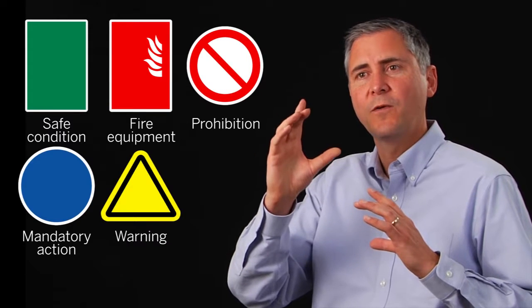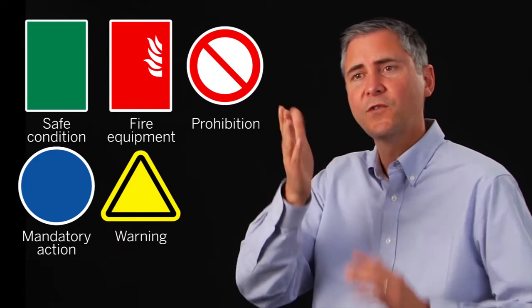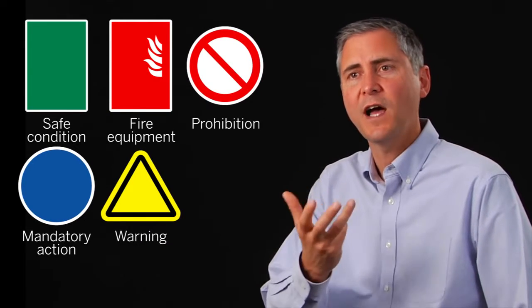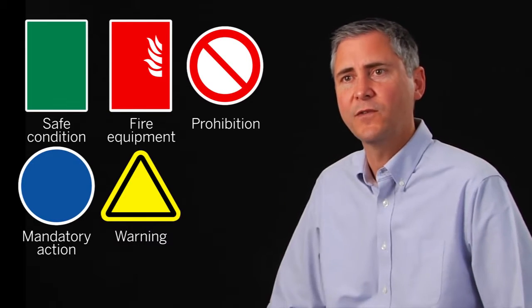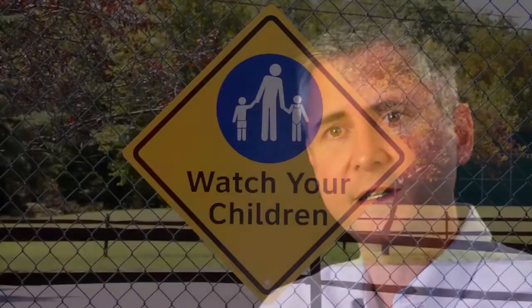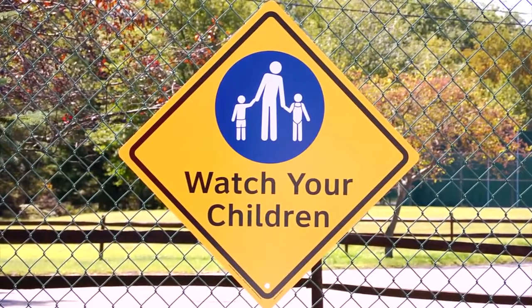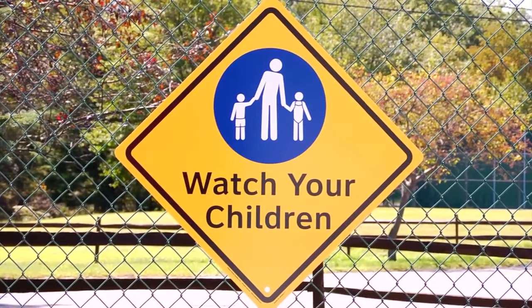So green, red, blue, yellow — in ISO, they all indicate a different type of safety message. As you get closer to the sign, you'd see not just the color but the symbol, and the symbol tells you what the specific message is. That's the vocabulary of how color is used in ISO.